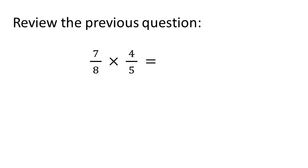We just multiply the numerators, 7 times 4, which is 28, and the denominators, 8 times 5, which is 40. So we had 28 over 40.